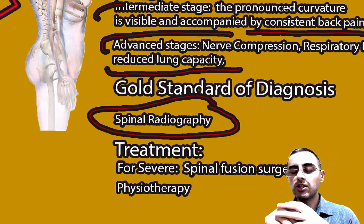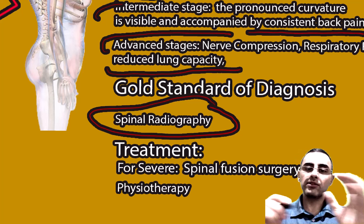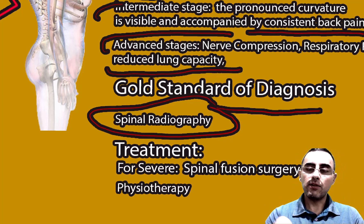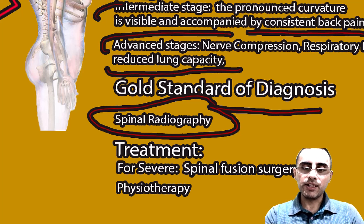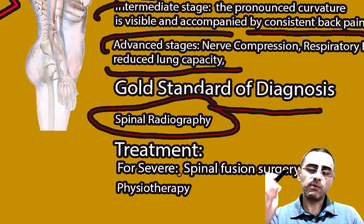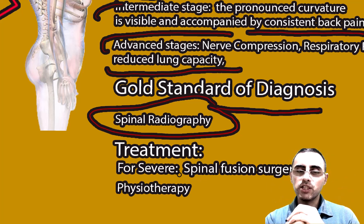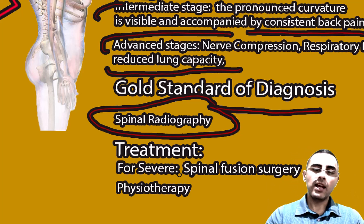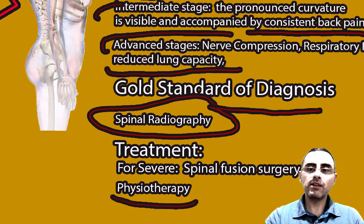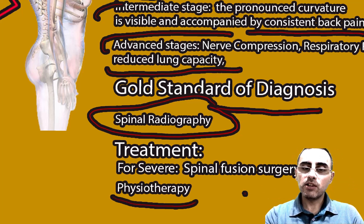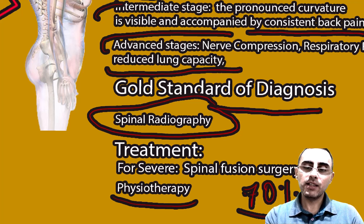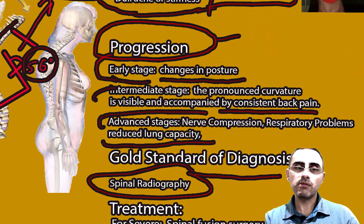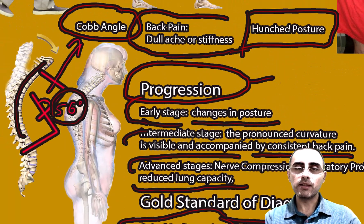Diagnosis is usually made with a chest X-ray, along with symptoms and physical examination. For severe kyphosis, spinal fusion surgery is the treatment. Physiotherapy is effective for mild cases, with effectiveness in around 70% of cases — but again, earlier intervention has better outcomes and better prognosis.